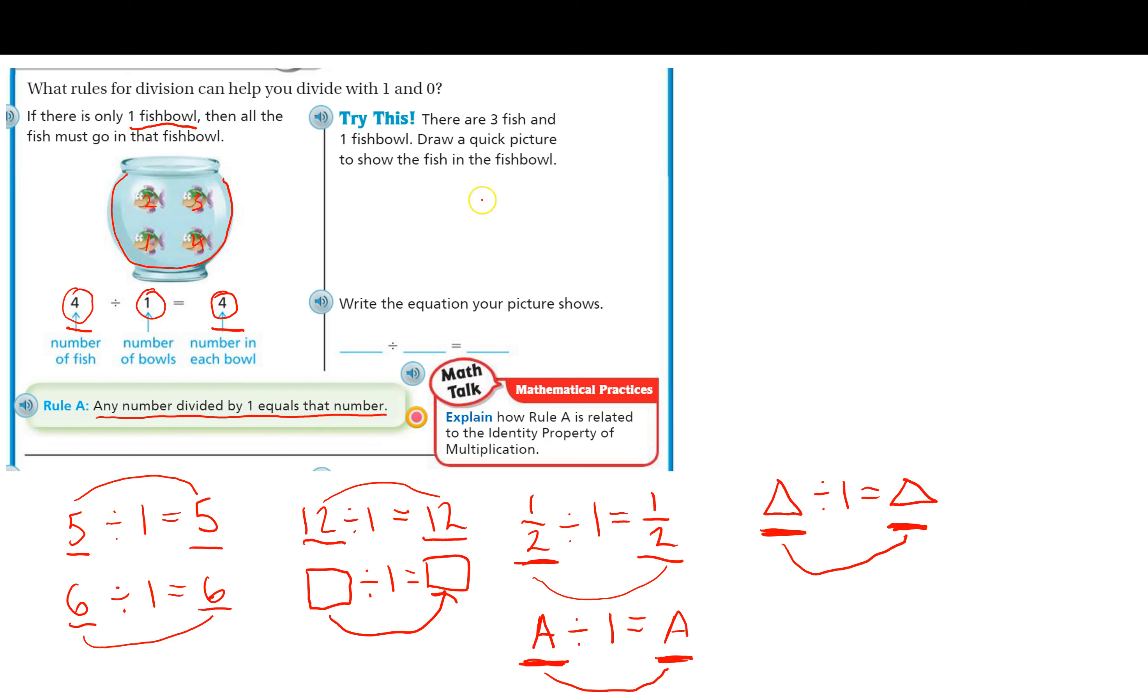Okay. Now, let's go back up into our book, and let's do the try this side. There are 3 fish and 1 fishbowl. Draw a quick picture to show the fish and the fishbowl. So I'm going to do like I did over here. This is going to be my fishbowl, and I have just 1 fishbowl. There's my 1 fishbowl. And then 3 fish. So there's 1 fish. Oh, that's an ugly fish. You can draw better than me, I'm sure. I'm really bad at drawing fish. There's the little eyes. There's my 3 fish, though.